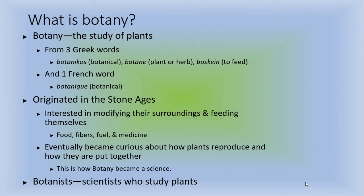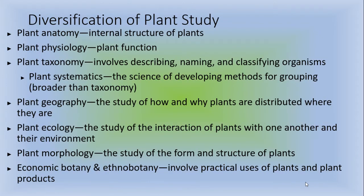So what is botany? Botany is the basic study of plants. It's from three Greek words meaning botanical, plants or herb, and feeding, and one French word botanic which means botanical. It originated in the stone ages and it was for people who were interested in modifying their surroundings and feeding themselves. You can use plants for food, fibers, fuel, and medicine. Eventually people became curious about how plants reproduce and how they're put together and this is how botany became a science. Botanists are scientists who study plants.